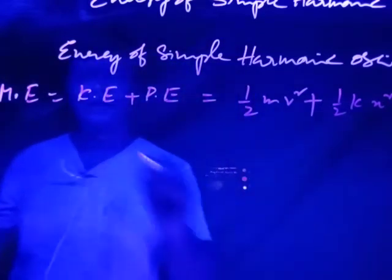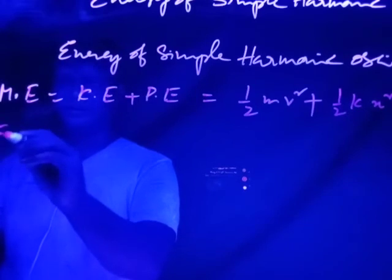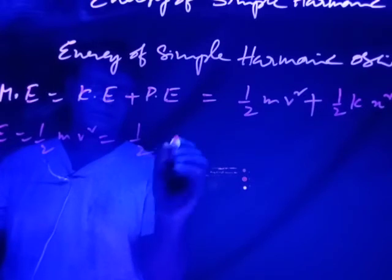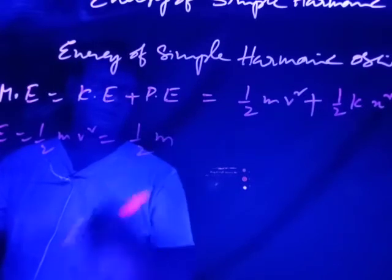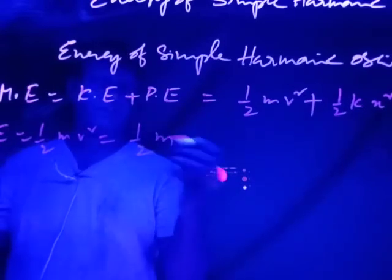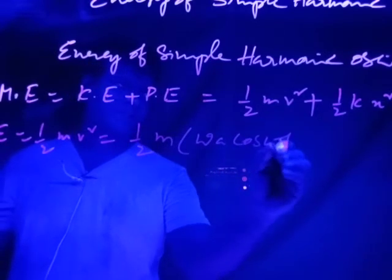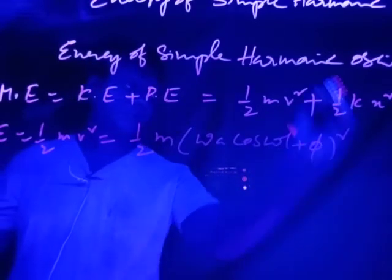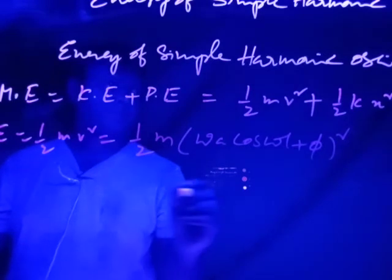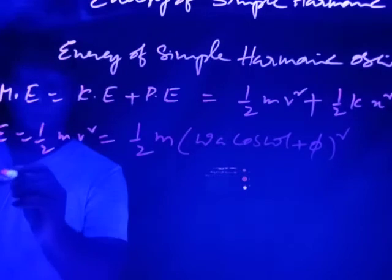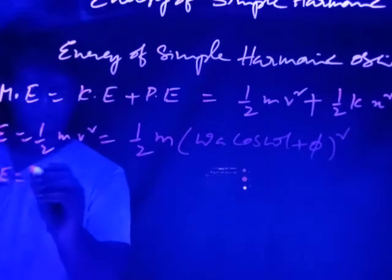The kinetic energy equation is KE = ½mv². Here, v equals ω·A·cos(ωt + π), so we substitute v² = ω²A²cos²(ωt + π) into the expression.